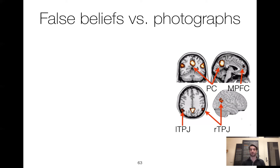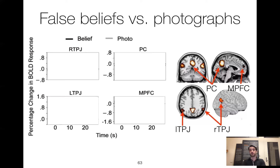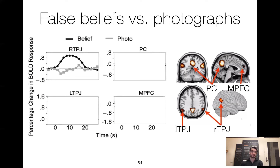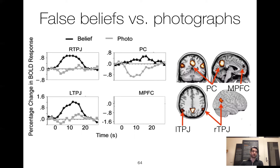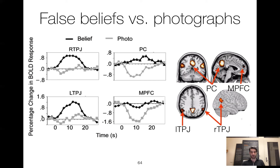You can look at the activation in these different brain regions — the percentage change in the BOLD response, which is the neural activity measurement. In all four of these brain regions, when a person is doing the false belief situation versus the false photo situation, the RTPJ is higher for false belief than false photo. This is also true in the left TPJ, the precuneus, and the MPFC, although the MPFC is a bit weird because both conditions go negative. Just note that in all four cases, the false belief condition is higher than the false photo condition.